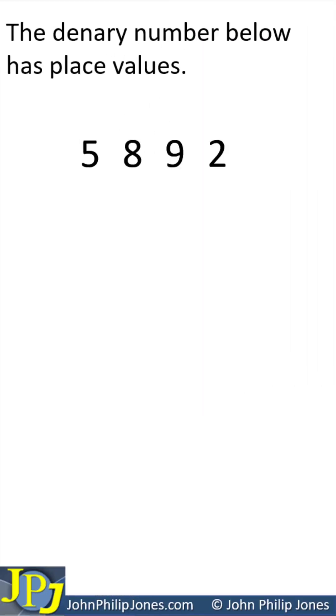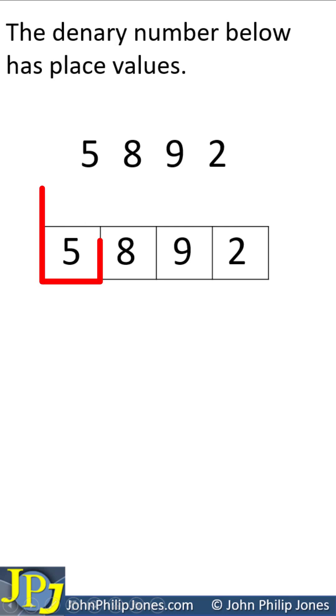The denary number below has place values. We can see it's 5,892. The number is moved into a grid of four columns. Each column has a place value.